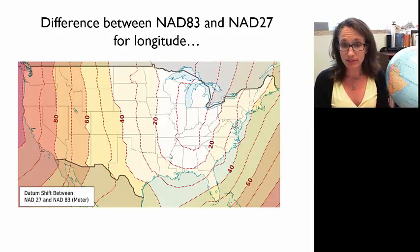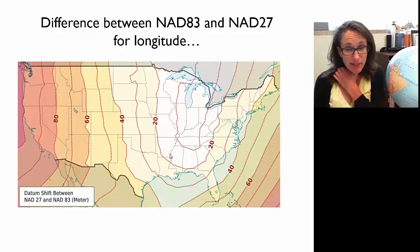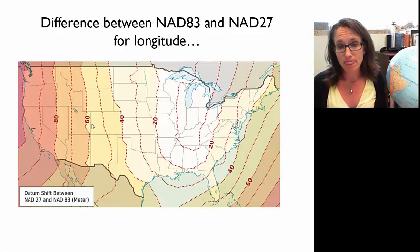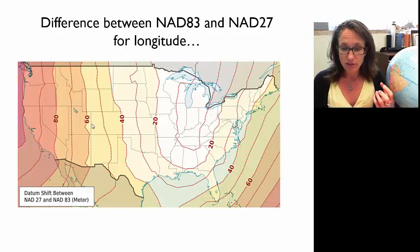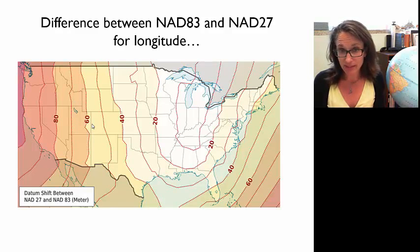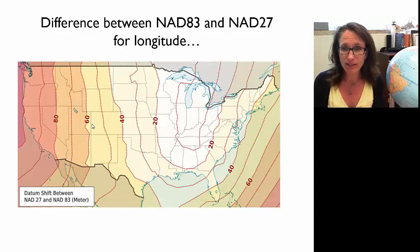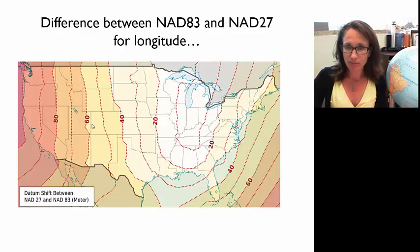This is an important point: different datums result in errors in position. The datum shift between NAD 27 and NAD 83 for longitude — the east-west distance — is 58 meters here in Grand Junction. So if you take a point with your GPS in NAD 83 and plot it on an old USGS topo map in NAD 27, your point will plot 58 meters wrong in the east-west direction. It's really important to pay attention to this to create accurate, high-quality maps.